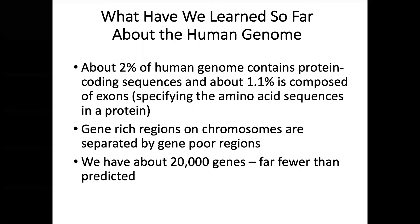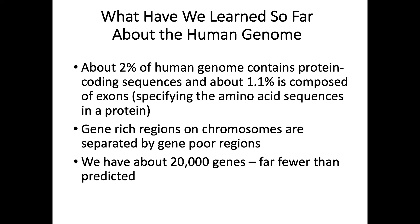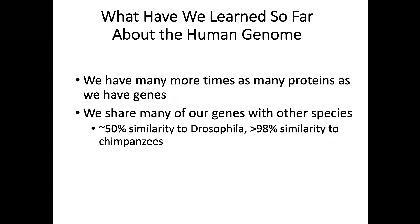From the Human Genome Project, we learned that about 2% of the human genome contains protein-coding sequences, and about 1.1% is composed of exons. Gene-rich regions and chromosomes are separated by gene-poor regions, meaning genes are dispersed in the genome. We also learned that we have only about 20,000 protein-coding genes, which is even less than the gene numbers found in mouse. Although humans don't have the most genes, human proteins can be diversified by alternative splicing and various post-translational modifications. We also share many genes with other species — about 50% similarity to Drosophila and more than 98% similarity to chimpanzees.